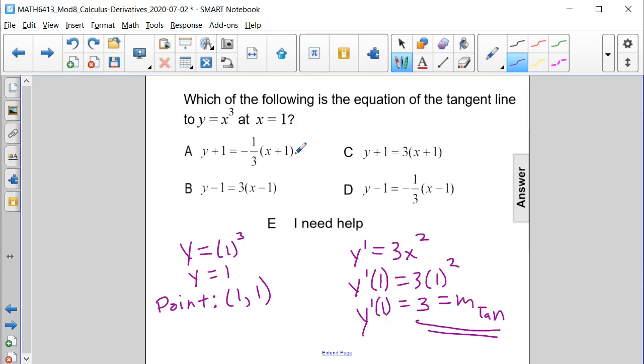Therefore, if I look at my answer choices, A is negative 1 third. That's not what our slope is, and so is D. So those can be canceled out. And then the difference between B and C is B has both minuses and C has both plus signs.